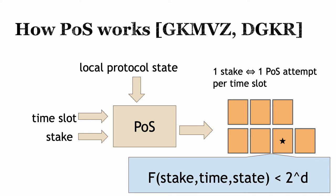Proof-of-work encouraged a lot of wasteful energy use as people bought more hardware to evaluate more lottery tickets. So proof-of-stake was introduced to tie the number of lottery tickets to something other than the amount of electricity you could consume. We give everybody a number of lottery tickets proportional to the amount of stake they have in the system. The proof-of-stake function takes a local protocol state, a time slot, and a piece of stake, and you evaluate those three with your proof-of-stake function — you have a winning ticket if your output is less than 2 to the d. The number of lottery tickets you get is the number of stakes you have per time slot times the number of valid local protocol states you can have per that time slot.